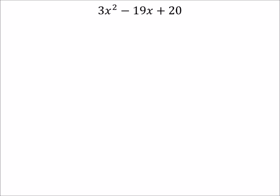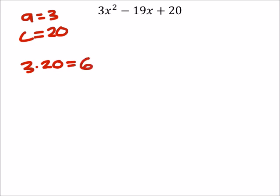So what we will do is take the a value, which is 3. The c value is 20. When we multiply them, 3 times 20, we get 60. The b value in this case is negative 19. So 60, we can split up.